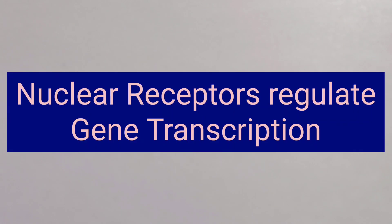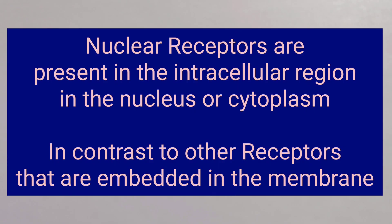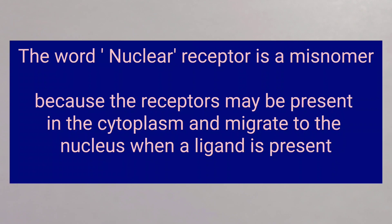Focusing on nuclear receptors, these receptors regulate gene transcription. Unlike the other receptors that are embedded in the cell membrane, these receptors are located in the intracellular region, either in the nucleus or in the cytoplasm. The term 'nuclear receptor' is a misnomer because these receptors may be present in the cytosol and they migrate to the nucleus when a ligand binds to it.